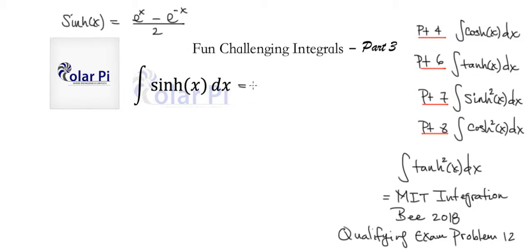What that means is we can rewrite our given integral as just the integral of e to the x minus e to the negative x, all divided by 2, and then of course dx. So this is really what we have to figure out how to integrate, but this is simple.